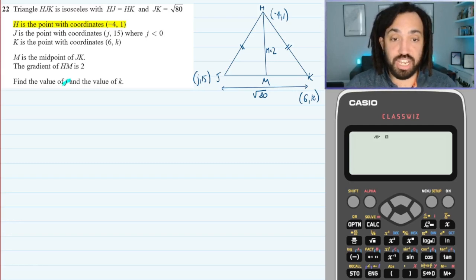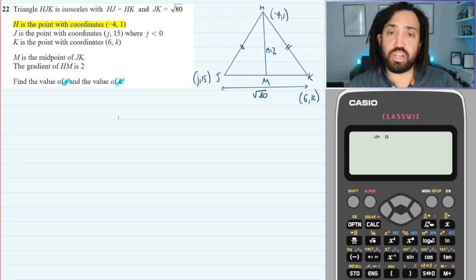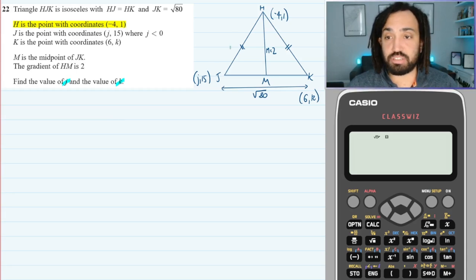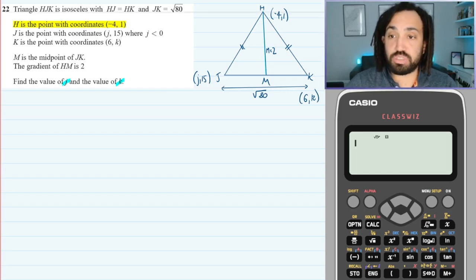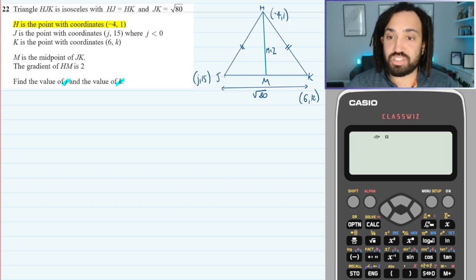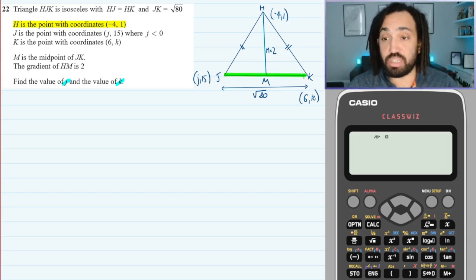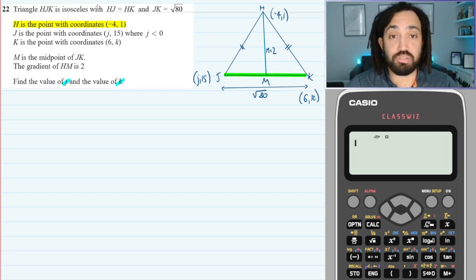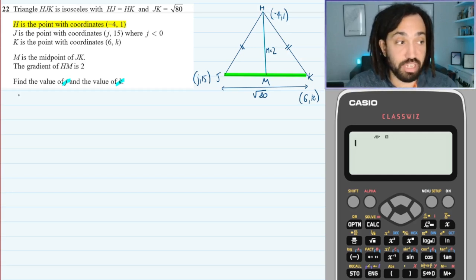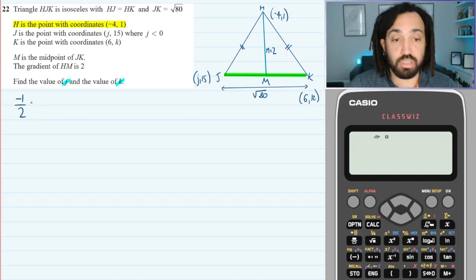What we need to do is find J and find K. Because we've got two unknowns, we're going to need to create two equations from all the information we've got. The first thing that jumps out to me is the fact that this line has a gradient of 2. We know that in an isosceles triangle the perpendicular height is perpendicular to the base. So whatever that blue line gradient is — we know it's 2 — it's going to be perpendicular to the green line, and that green line has J and K on it.